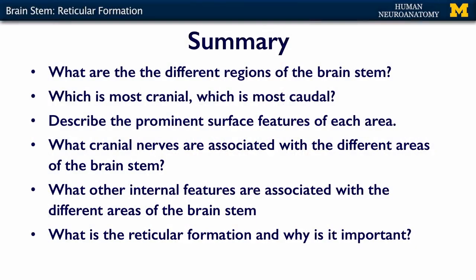In summary, what should you know about the brainstem? Know the different regions — which is the most cranial and which is the most caudal. Be able to describe the most prominent surface features of each area, such as the olive and the tectum. Know which cranial nerves are associated with each region: which are in the medulla, the pons, and the midbrain. Know the internal features such as decussations, the fourth ventricle, and the cerebral aqueduct. And know what the reticular formation is, where it is, and why it is really, really important. If you understand all of these concepts, you're ready for the assessment.